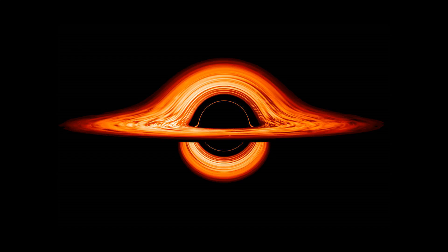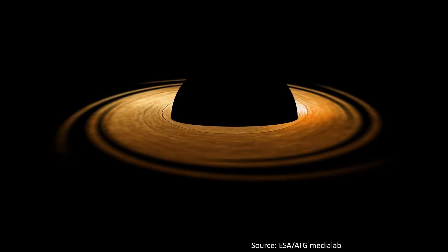Now we're ready to discuss why a black hole looks like this. The dark part in the middle is the black hole. A black hole is a sphere and its color is black because it is initially just the interior core of a dead star, which happens to be a sphere. It's black because it's extremely heavy, creating gravity so strong that even light — the fastest thing in the universe — cannot escape it.